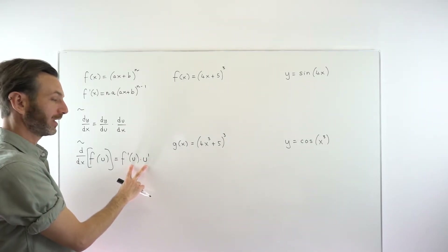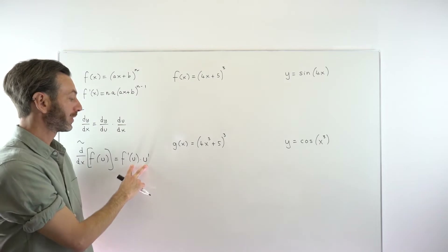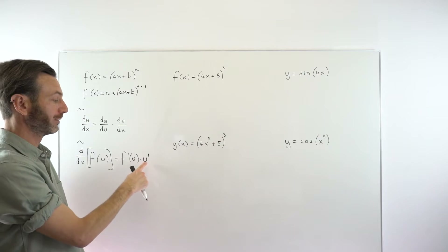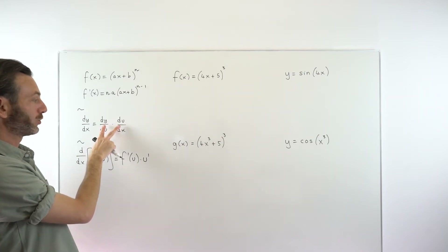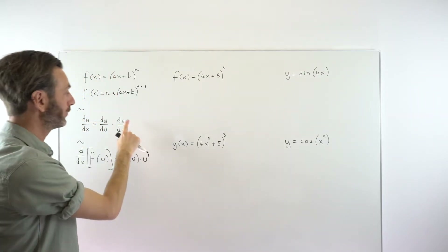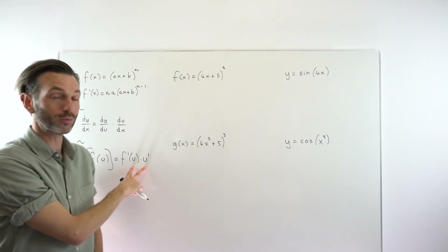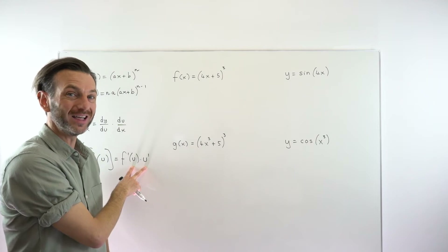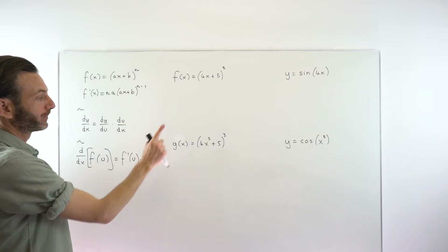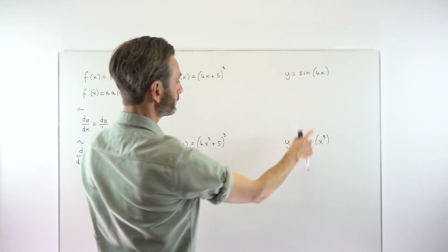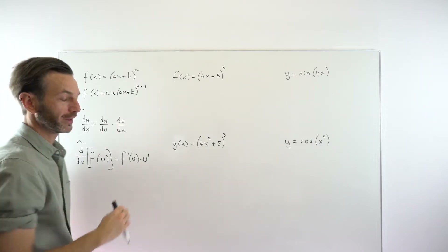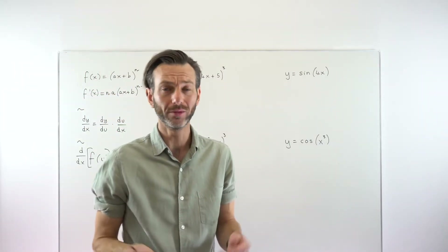The reason I like this version is it's easy to see you're differentiating the inside and outside functions and multiplying them together. This is far more widely applicable and quicker to use in practice. So let's think about these examples using this formula — all it's telling you to do is take two derivatives and multiply them together.